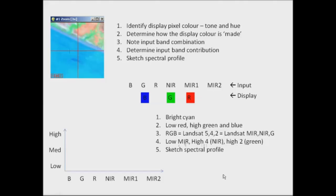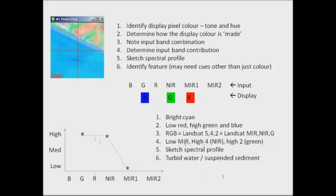We sketch that spectral profile — this time we're missing out the red, so there's a bit of a data gap there. We identify the feature as turbid water or suspended sediment. Water will have a low reflectance value in the mid-infrared. Water usually also has a low reflectance value in the infrared, but because it's got a high level of suspended sediment, what's actually getting reflected is that sediment rather than just the water content — which is why we're getting a high level of near-infrared and high in the green. Hopefully that gives you an indication of how we go through the process of understanding colours and how they link with band display to help you interpret features within your image.